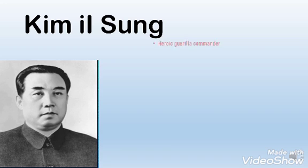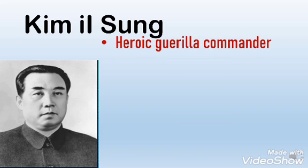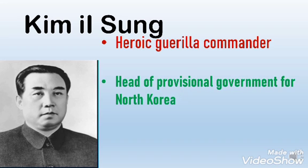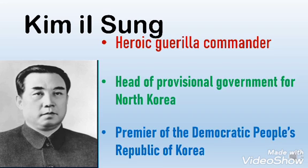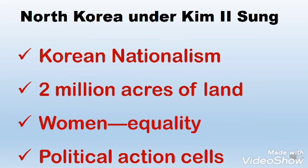This man is Kim Il-sung. He was a Soviet army captain and became known to be a heroic guerrilla commander. In early 1946, Soviet occupying forces chose him to head the provisional government for North Korea. Three weeks after the Southern Republic of Korea was made, Kim Il-sung was named Premier of the Democratic People's Republic of Korea on September 9, 1948. Kim didn't want a Soviet satellite state and instead embraced Korean nationalism.